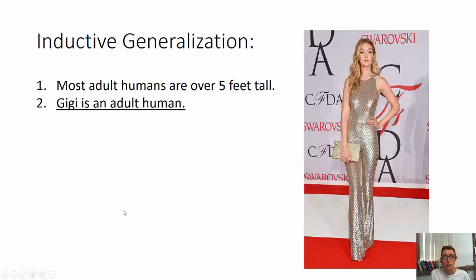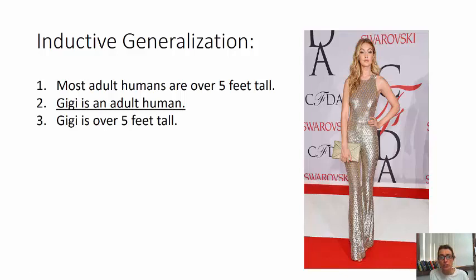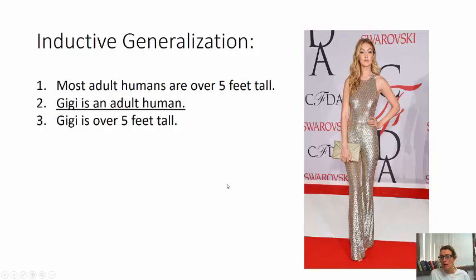What is most likely true? What would be a good bet? Let's put our money on GG being over five feet tall. Is it guaranteed? No, not at all — my mother-in-law is four foot eleven. There are people under five feet tall who are human beings.